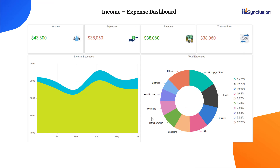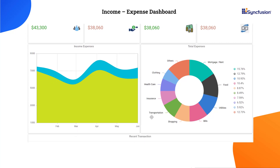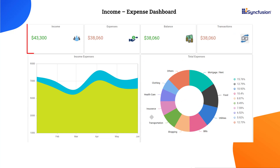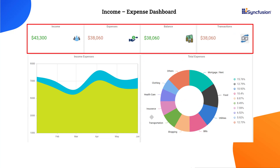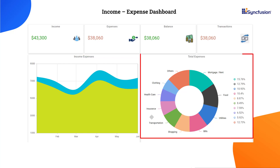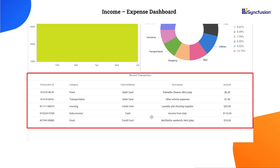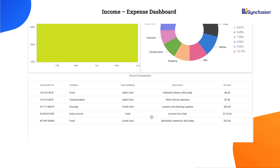I will design a dashboard layout that represents data visualization of income, expenses, and transactions over a period of six months. This example layout has seven panels. The first four panels display information about total income, expenses, balances, and transactions. Here is a Vue Spline Area Chart component that visualizes the income and expenses for six months. The pie chart visualizes the expenses made in different categories. And the Vue Grid component shows details of transactions like ID, category of expense, mode of payment, and amount.